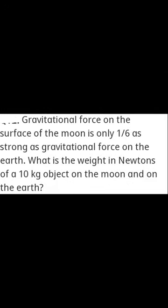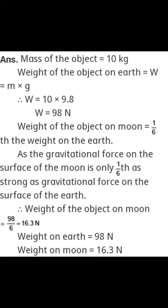The gravitational force on the surface of the moon is only 1/6 as strong as gravitational force on the earth. What is the weight in Newtons of a 10 kg object on the moon and on the earth? The gravitational acceleration on the moon is 1/6 of earth's gravitational acceleration. For earth: weight = 10 × 9.8 = 98 N. For the moon: weight on earth divided by 6 = 16.3 N. However, the mass of the object remains 10 kg on the moon because mass does not change.